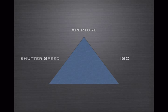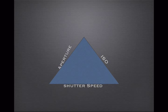In this tutorial I'm going to talk about some of the essential elements of photography. Those elements are aperture, shutter speed, and ISO. Then afterwards we're going to talk about exposure values and how all of these settings relate to each other.